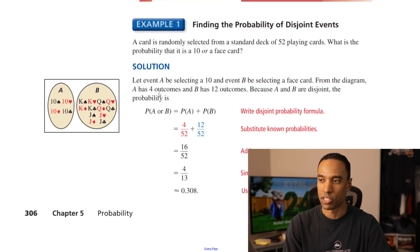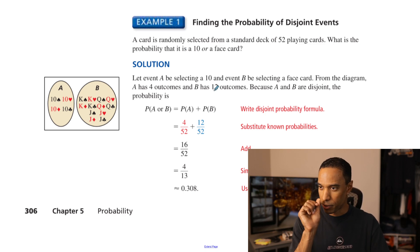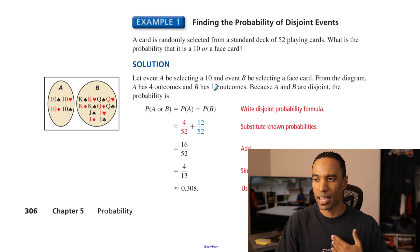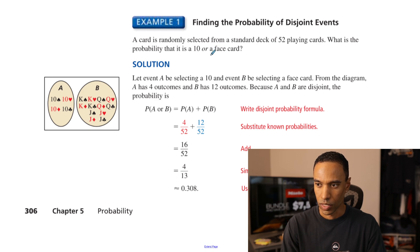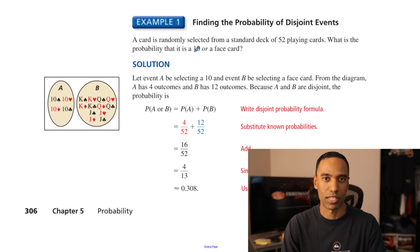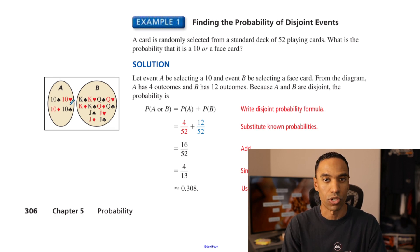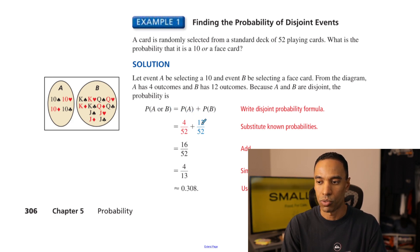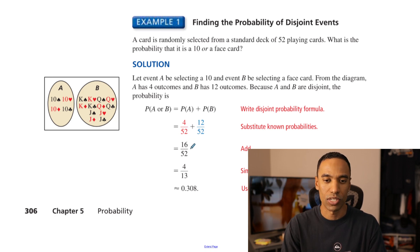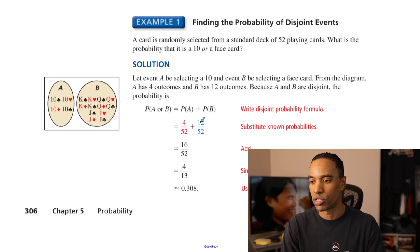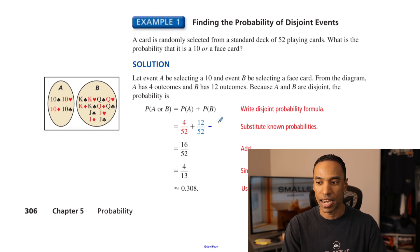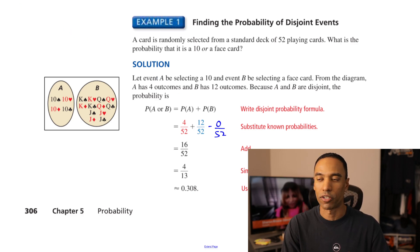Finding the probability of disjoint events: a card is randomly selected from a deck of 52 playing cards. What is the probability it is a 10 or a face card? Tens and face cards are mutually exclusive because there's never a 10 that will ever be a face card. There are 4 tens and 12 face cards possible, with no overlap. So probability of 10 or face card is 4/52 plus 12/52, which is 16/52. They are disjoint, so you just do the addition.